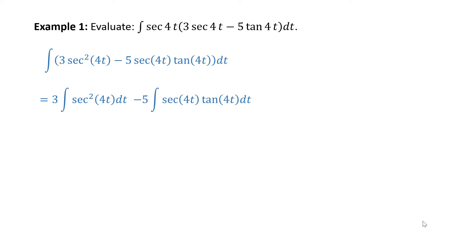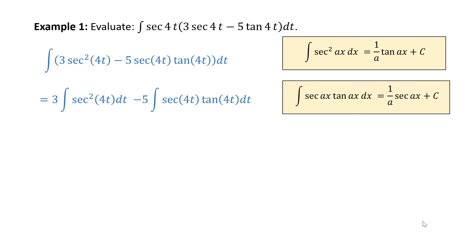To find these integrals, we use our basic integration of trig properties. The integral of secant squared ax dx is equal to 1 over a times tangent ax plus a constant. And the integral of secant ax tangent ax dx is equal to 1 over a times secant ax plus C.